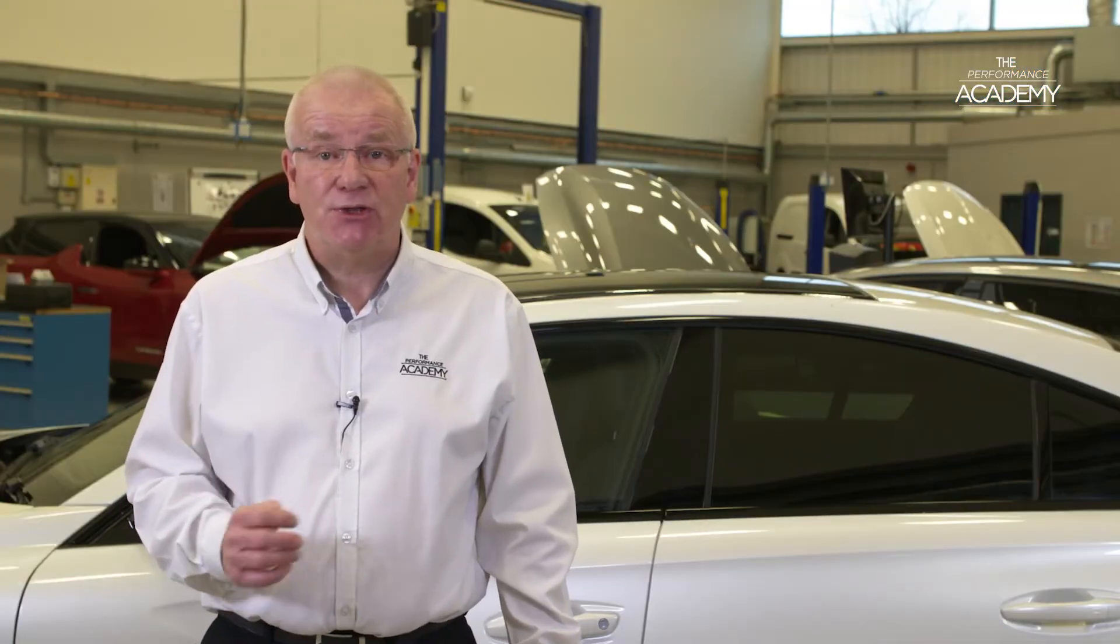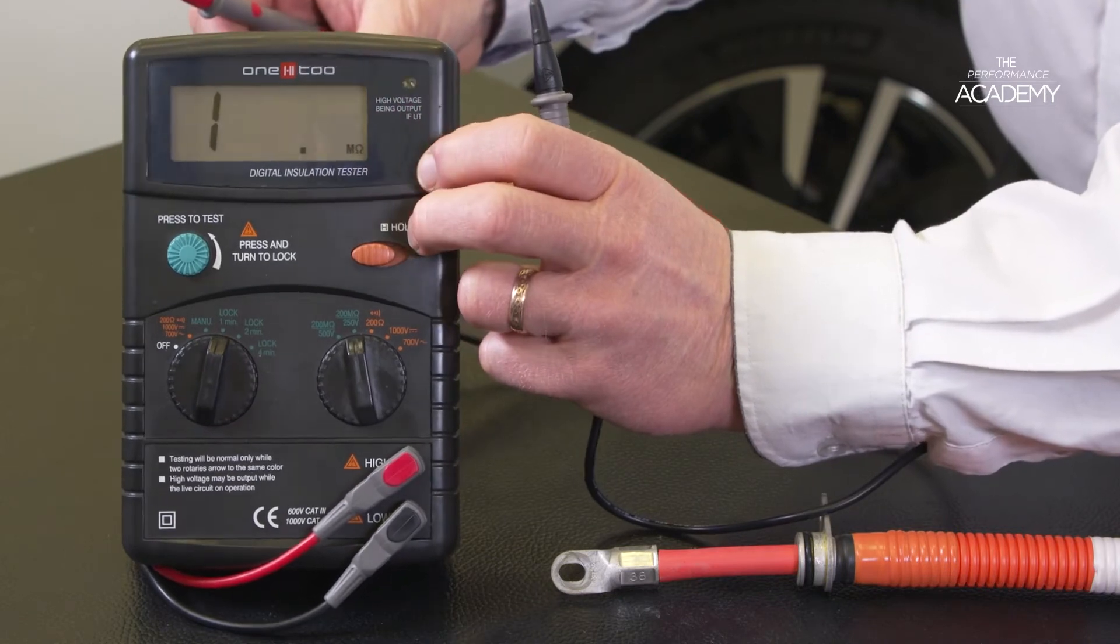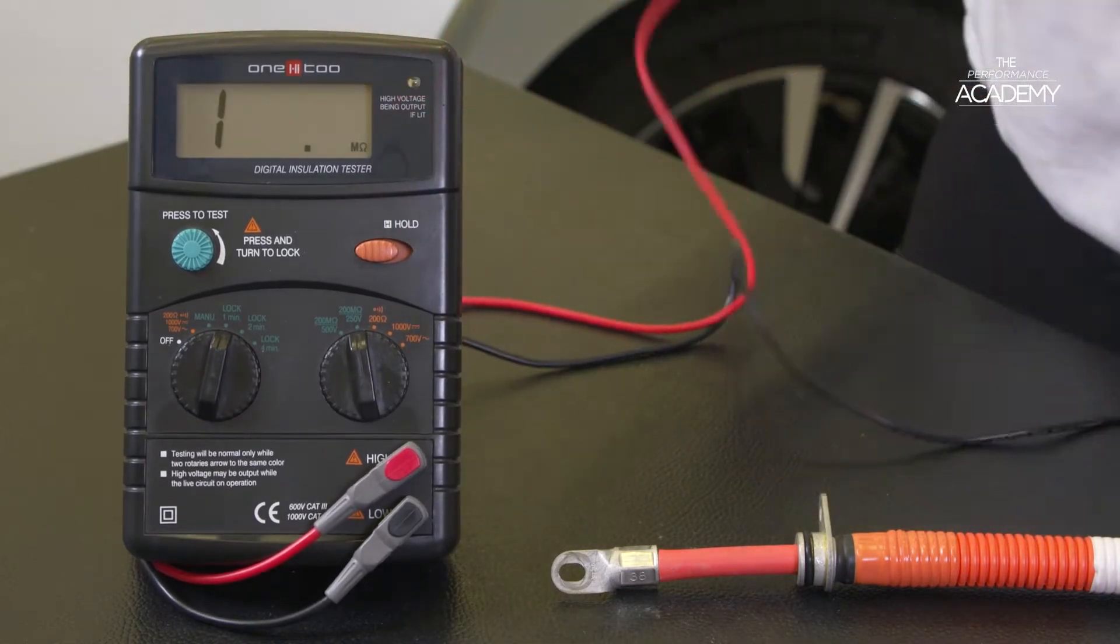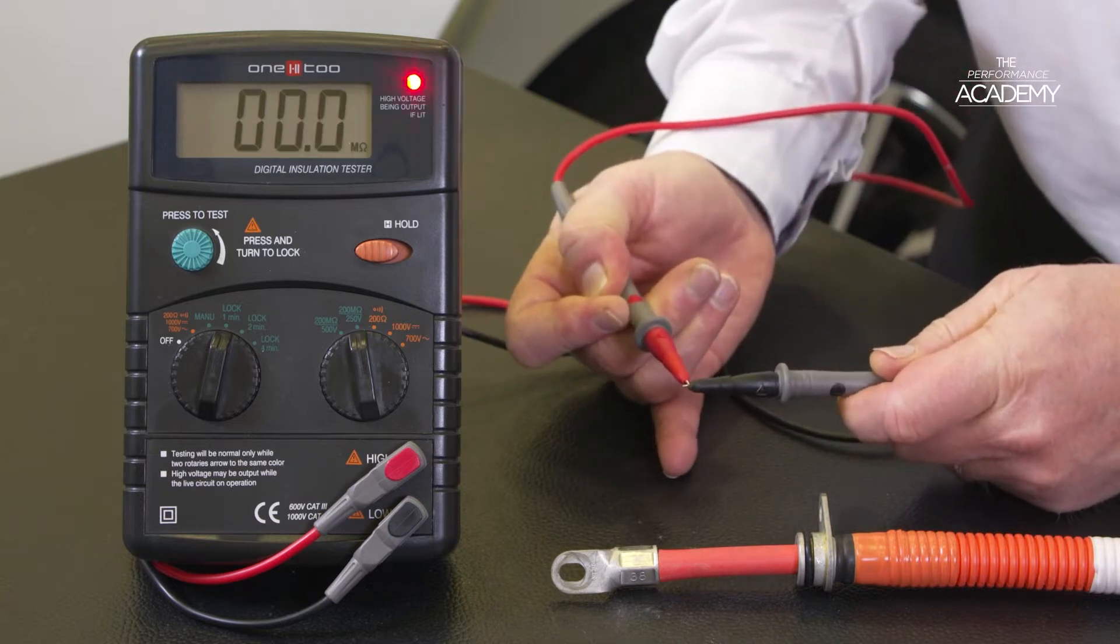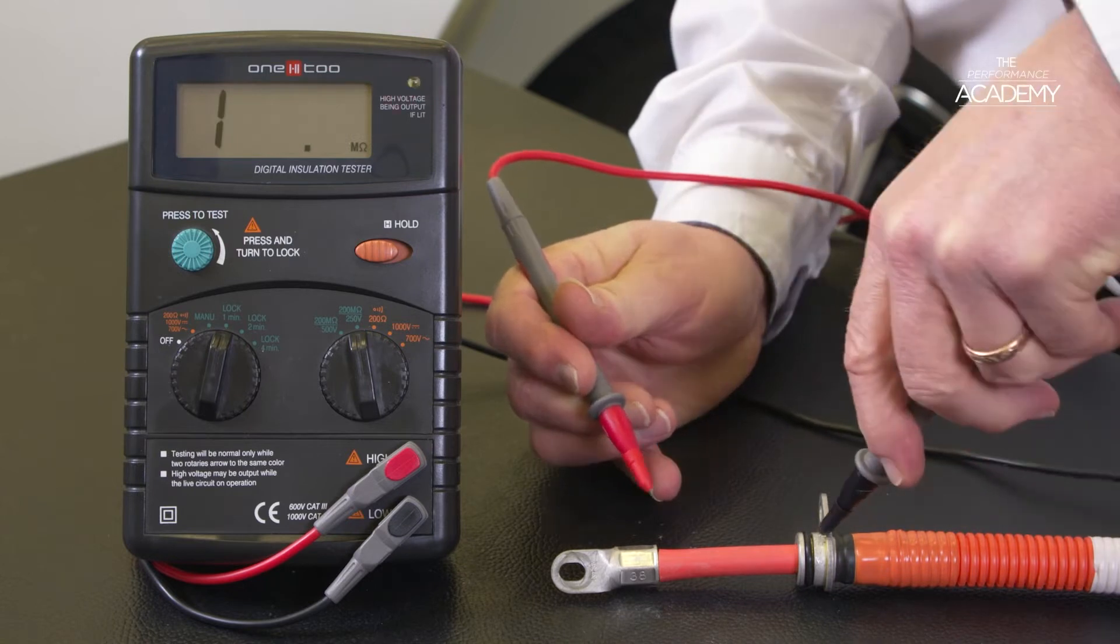This also makes the screen a reference test point when carrying out a manual insulation test using the insulation tester. Again checking the screen is not electrically contacting in any way with the vehicle's high voltage circuits.